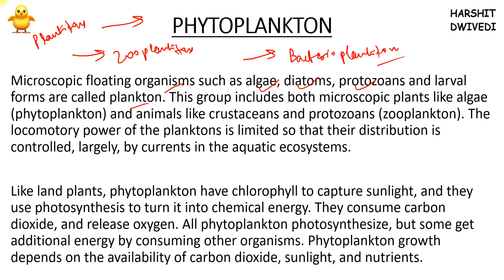The first type is phytoplankton. Phytoplanktons have chlorophyll in them. These phytoplanktons can capture sunlight, do photosynthesis, and convert sunlight, chlorophyll, and nutrients into chemical energy — that is, they can produce food. They consume carbon dioxide and release oxygen. During photosynthesis, oxygen is released and carbon dioxide is consumed. So one source of dissolved oxygen in the aquatic ecosystem is the process of photosynthesis. That is why phytoplanktons are very important, and all phytoplanktons are capable of doing photosynthesis.